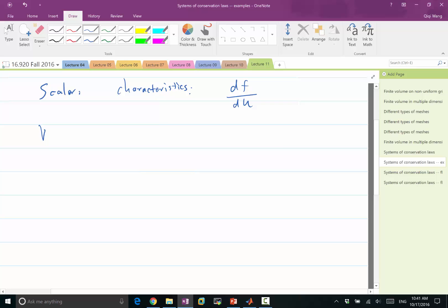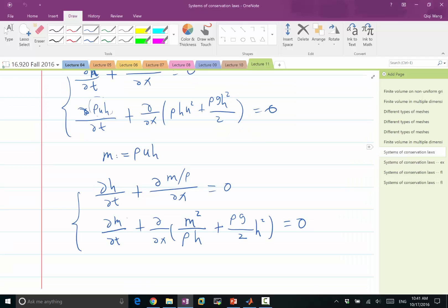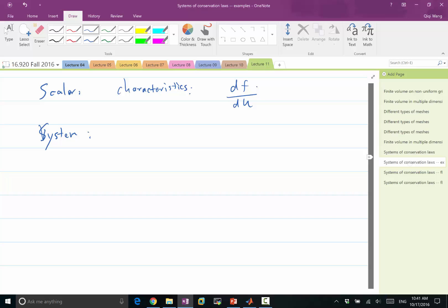Now we have a system of conservation laws. F, if you remember, there are two Fs, right? So F, in this case, have F1 that is M over rho and F2, which is this formula over here. So we have two Fs. We have F1 and F2. We also have two Us. We have U1 and U2.